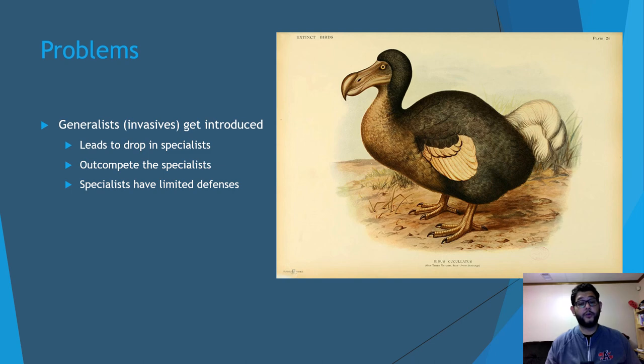And then you have the species that have limited defenses. This is a picture of the dodo bird. The dodo bird lived on an island called Mauritius, just off the coast of Madagascar. It didn't do so well in the presence of humans because it had never seen humans. And it was this big, large specialist species. Humans came in during the 1500-1600s, and they ate a lot of these dodo birds. They went extinct within 50 years of humans showing up. They just were not able to keep up and they have limited defenses.